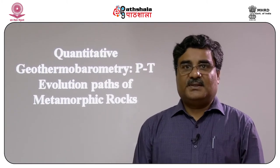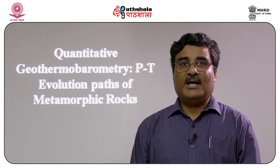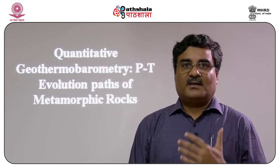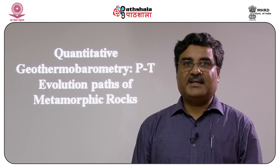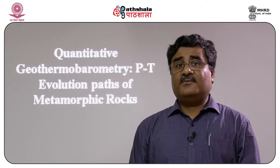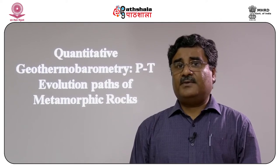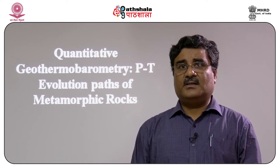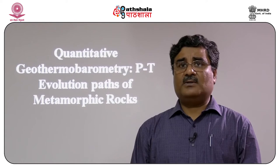A very good thermometer should have a very steep dP/dT slope. From the Clapeyron equation, dP/dT equals ΔS/ΔV. So for a very good thermometer, it should have very high ΔS — a high change in entropy — and very small or insignificant ΔV. It should be very sensitive to temperature and not very sensitive to pressure.